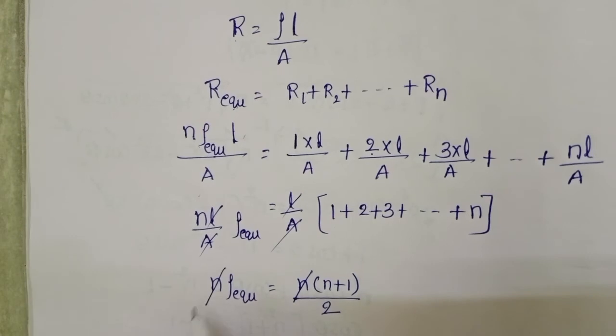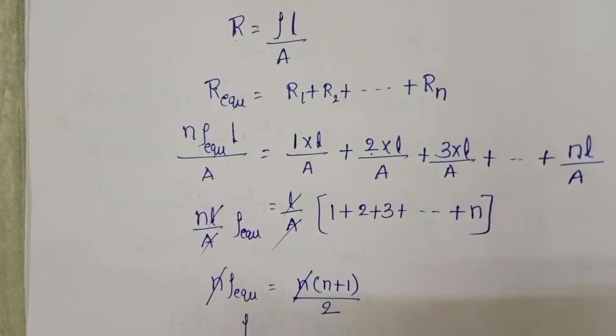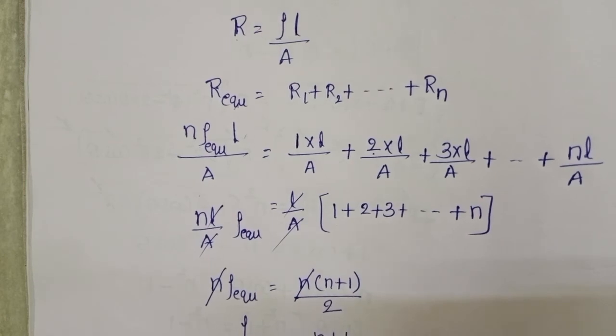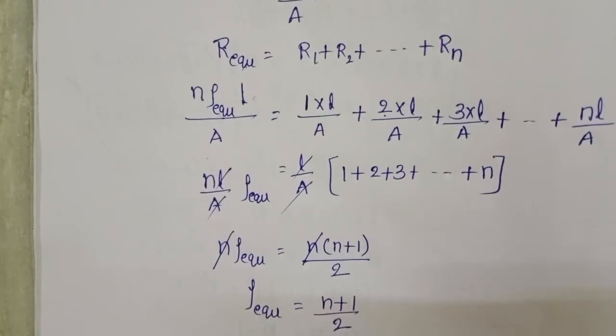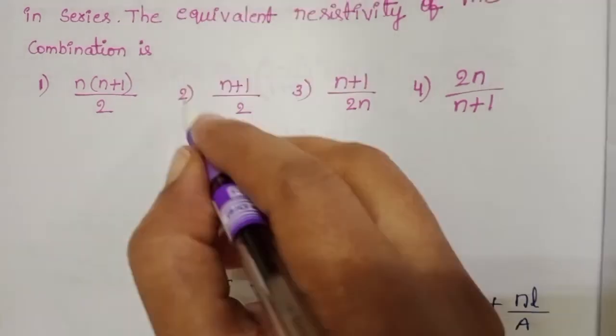So on both sides N get cancelled. Equivalent resistivity is equals to N plus 1 by 2. Second option is correct.